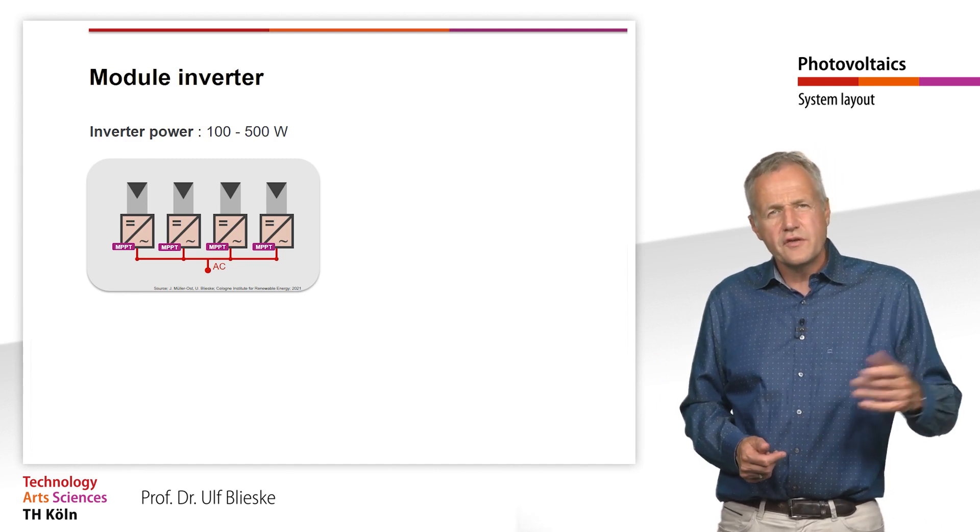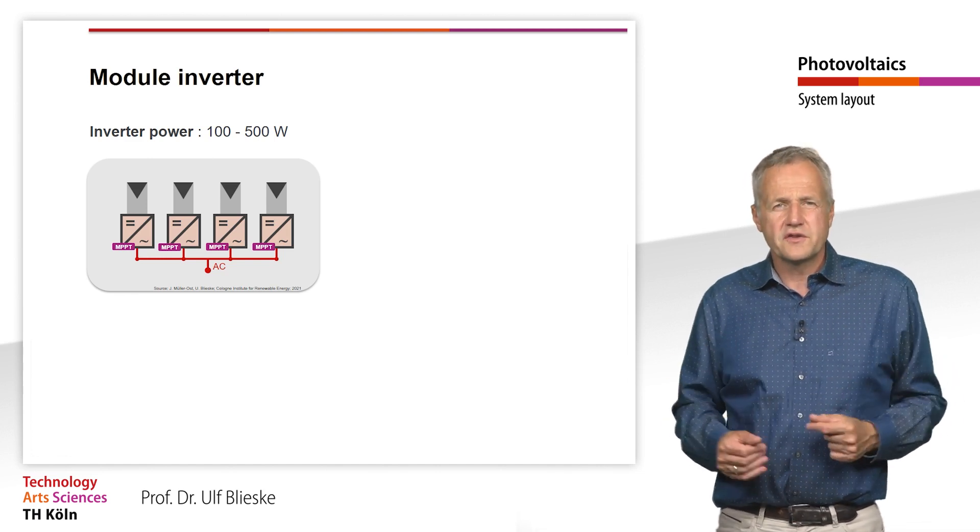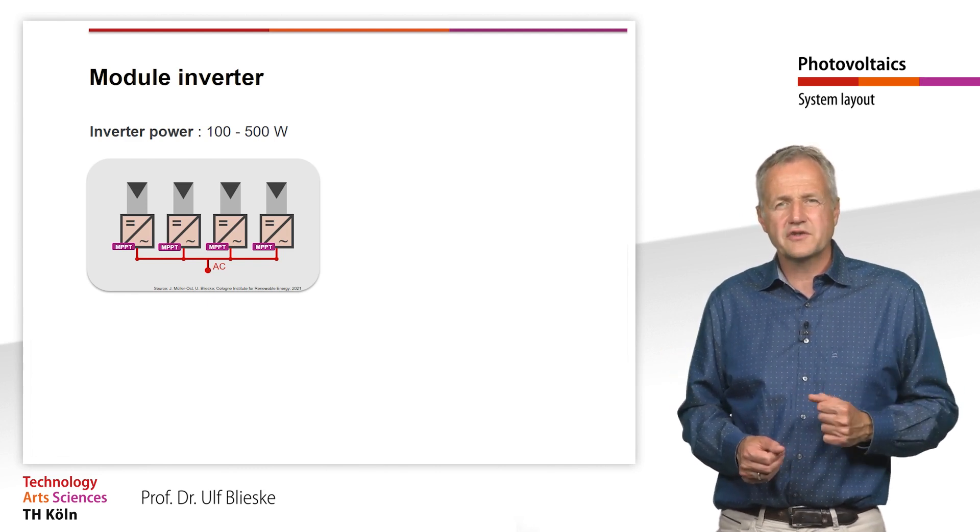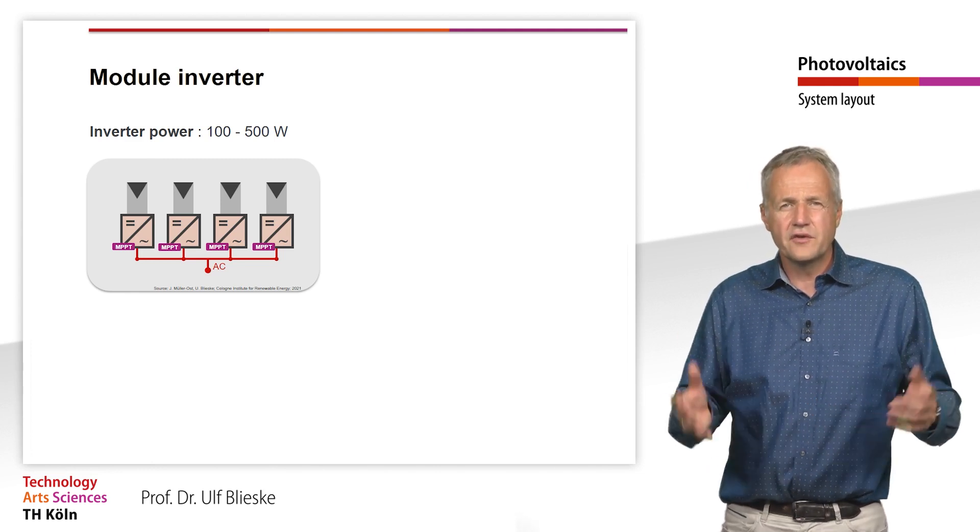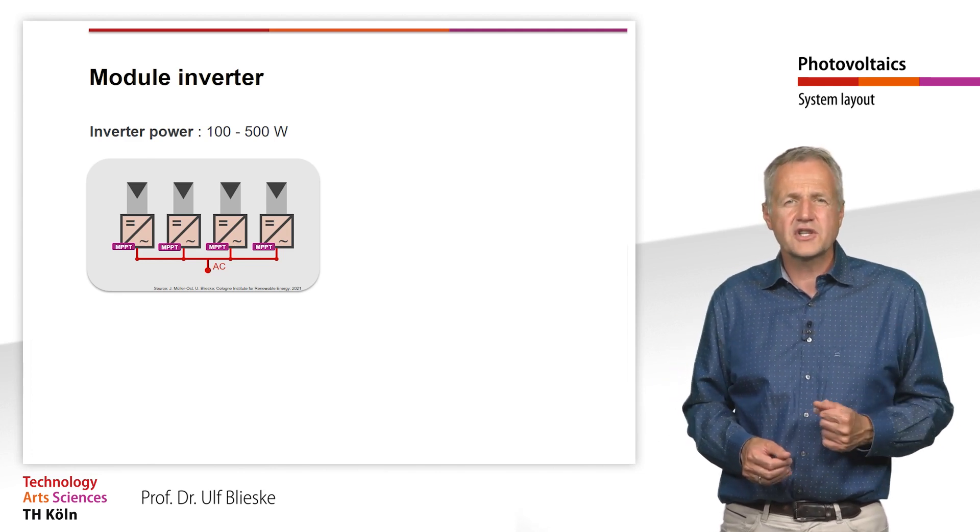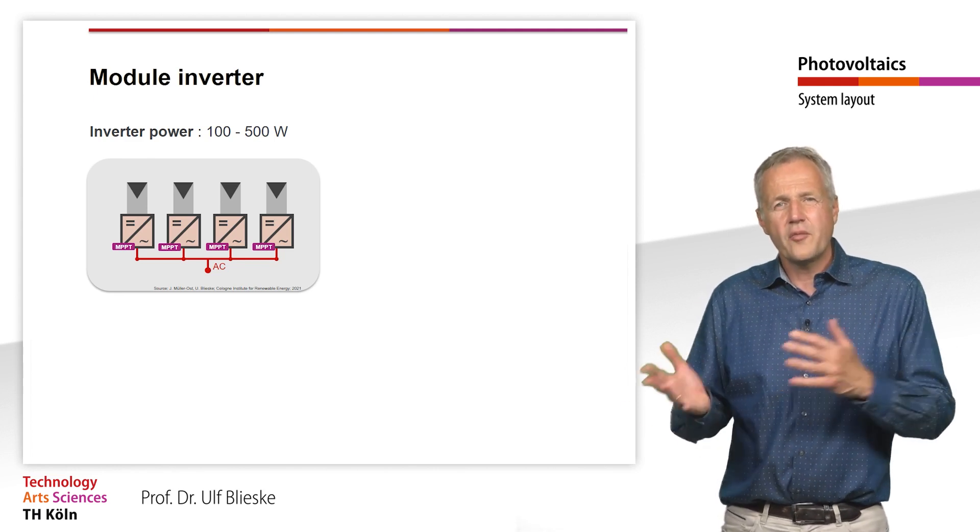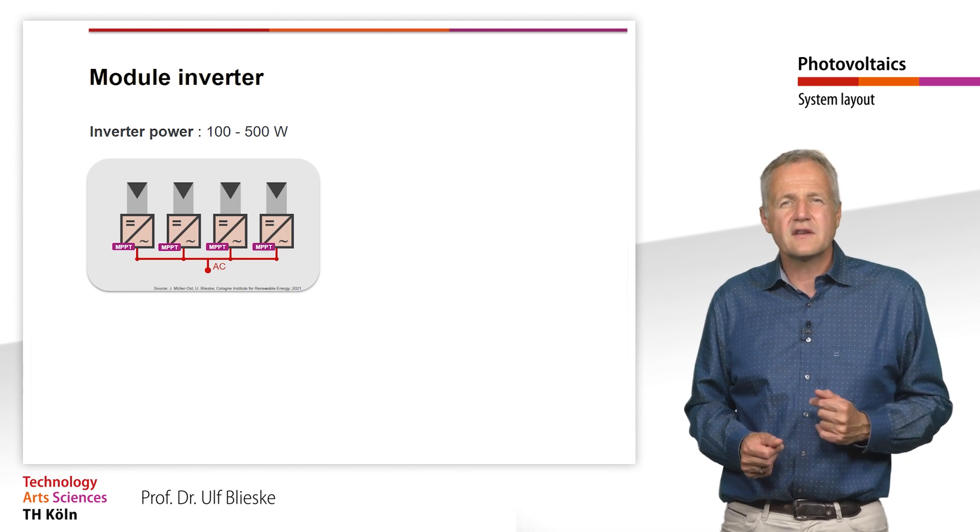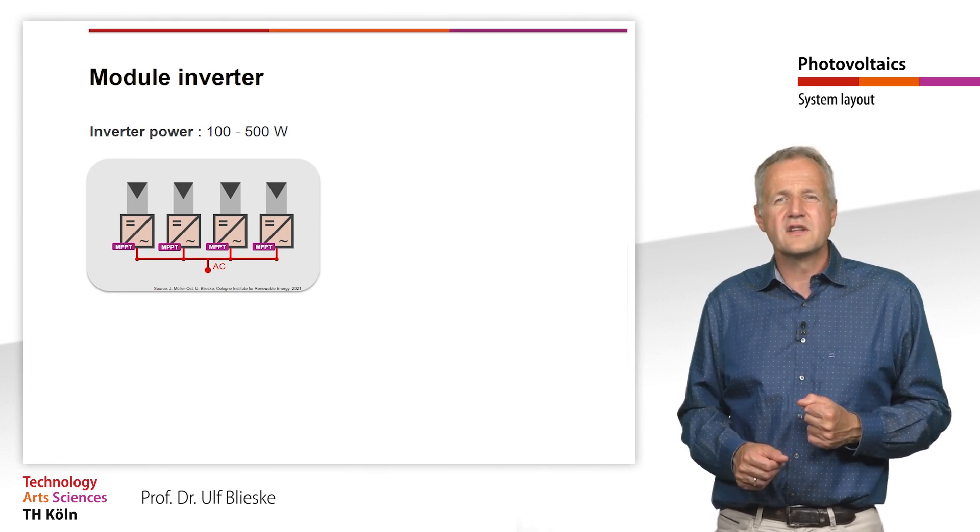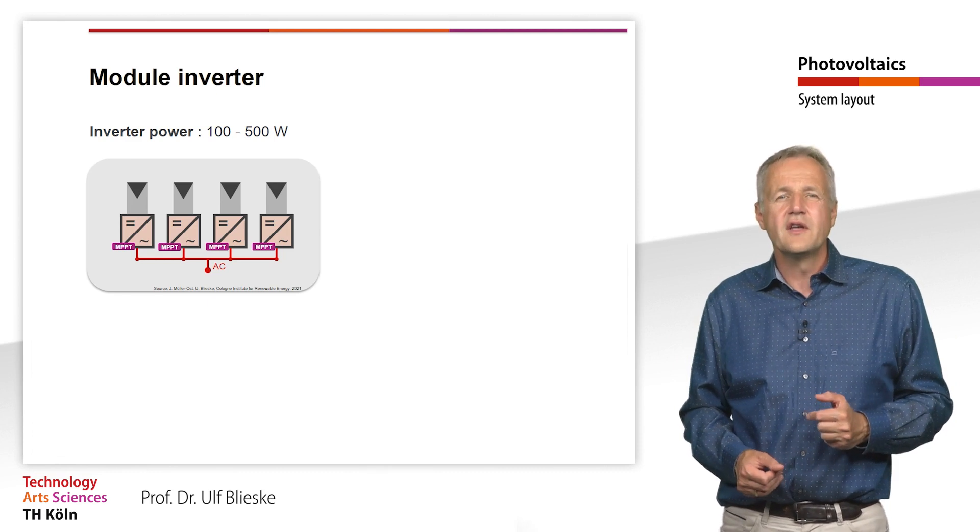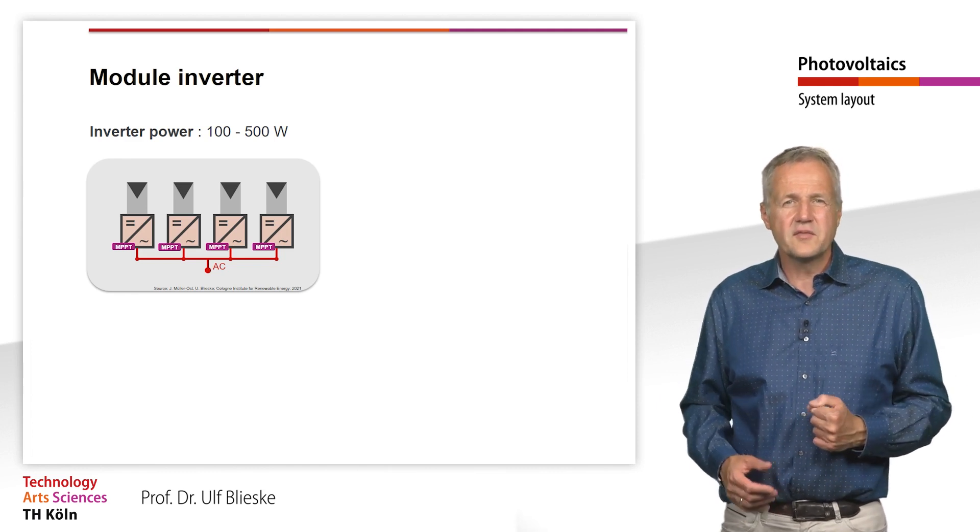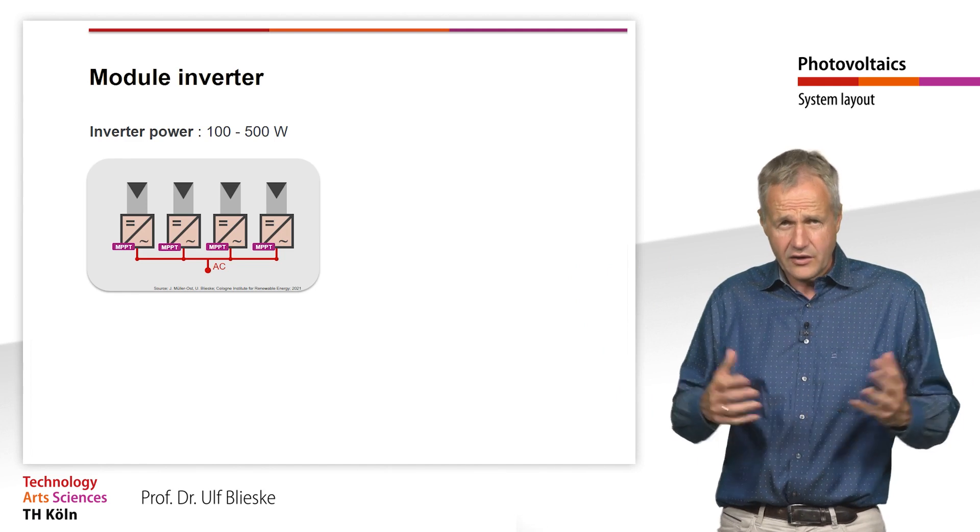One major problem with module inverters is that they are mounted on the roof with the modules. As a result, they are exposed to wind, weather and above all high temperature fluctuations, which greatly affects the service life of the module inverters and can lead to premature failure. In any case, the lifetime of an inverter is much shorter than that of a PV module, whether it is a string or module inverter. It can be assumed that an inverter needs to be replaced after about 10 years. The replacement of a module inverter is possible, but due to the installation on the back of the module on the roof, it is associated with a significant effort. While this can still be done easily with small systems, the effort increases with increasing system size.